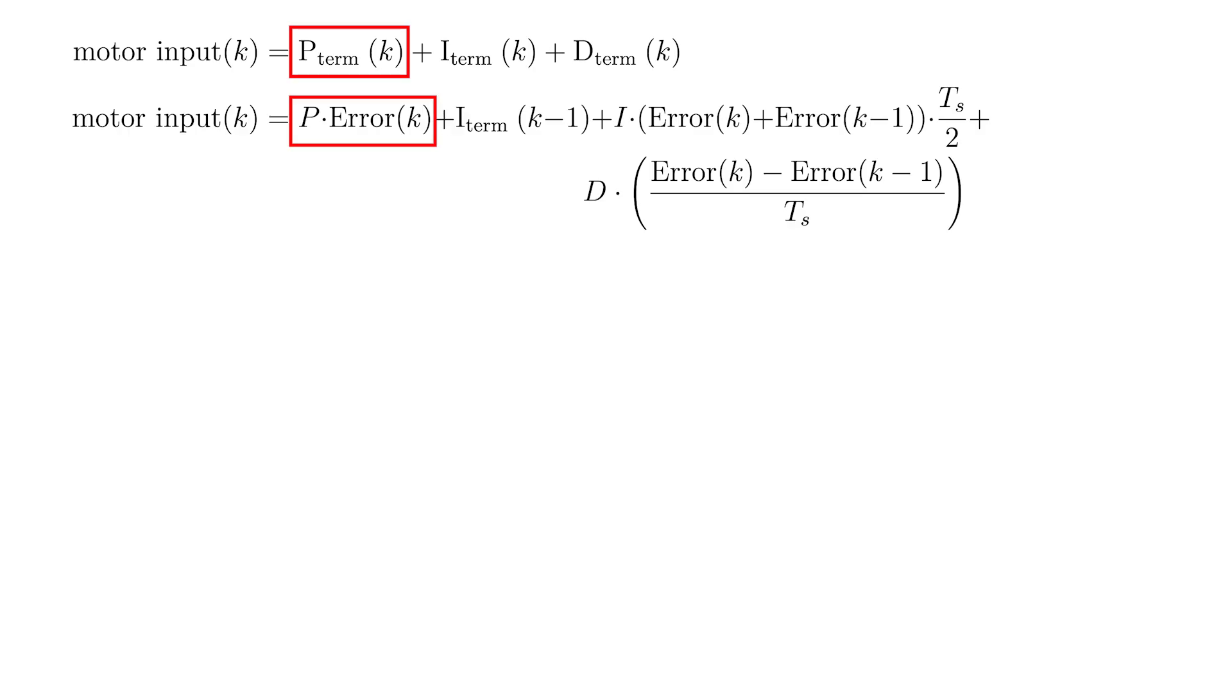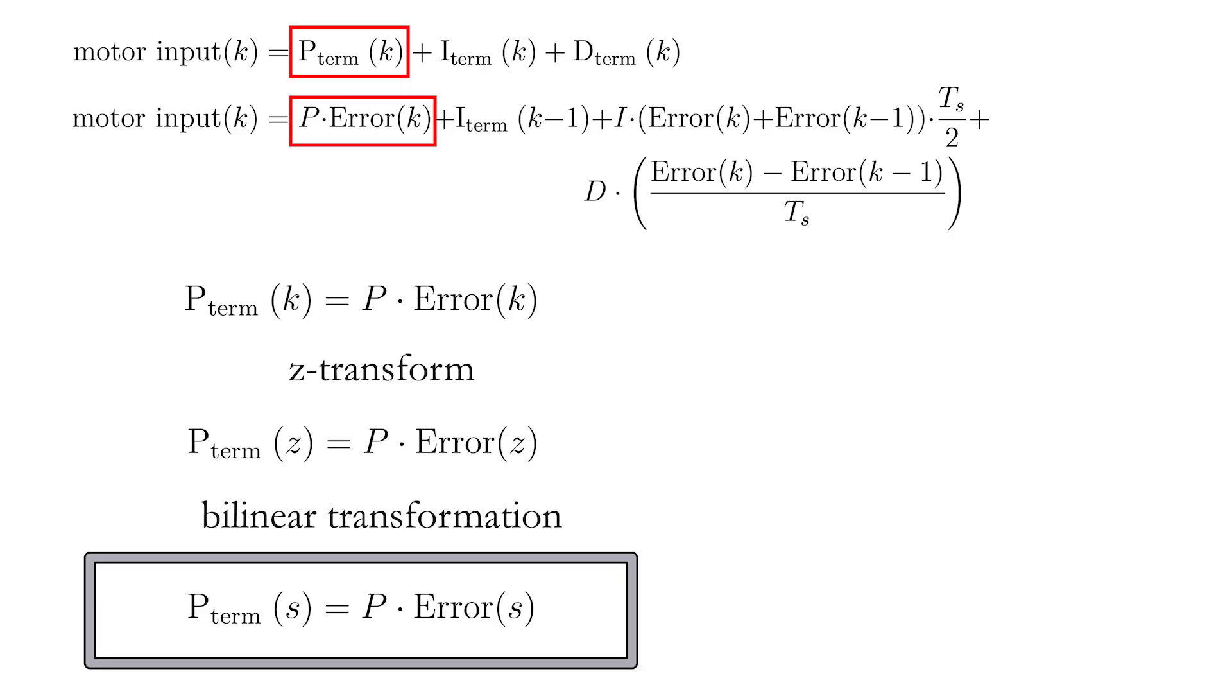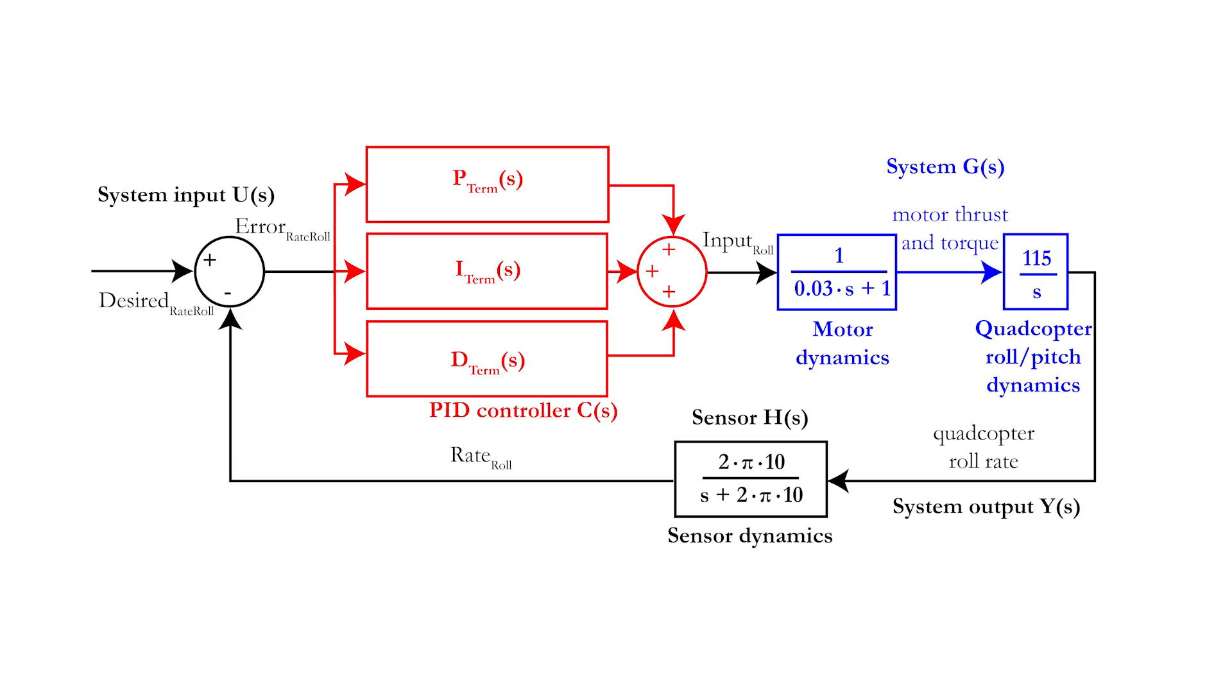Now, let's start with the P or proportional term of our controller, which is the easiest transformation. Because P is just a constant, the transformation from the k to the z domain and the s domain is trivial, because of the linearity property for all domains. This gives us the transfer function for the P term, which is the first transfer function of our PID controller.